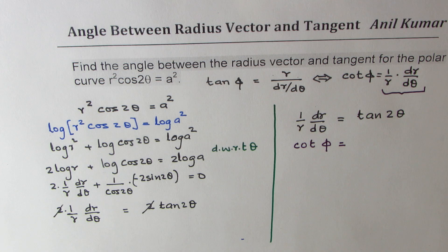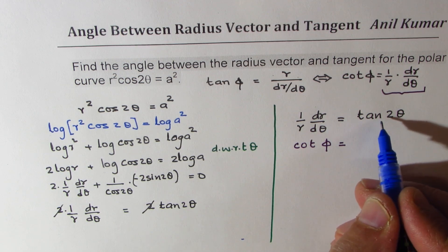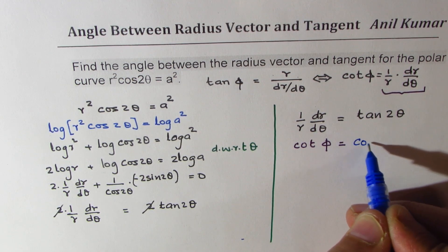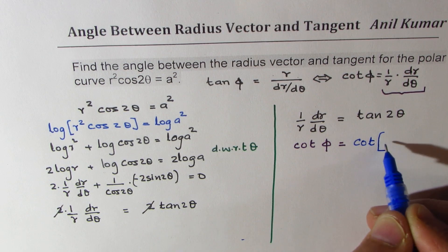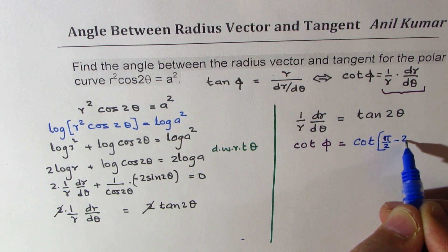Now as far as tan 2θ goes, we could use co-function identity. Right. So we could write this also as cot. We can write this as cot of π/2 - 2θ.